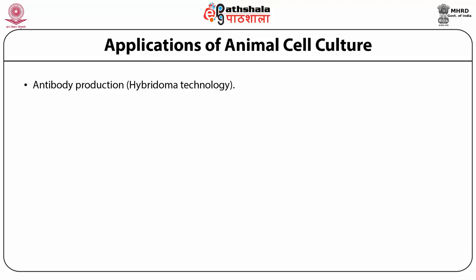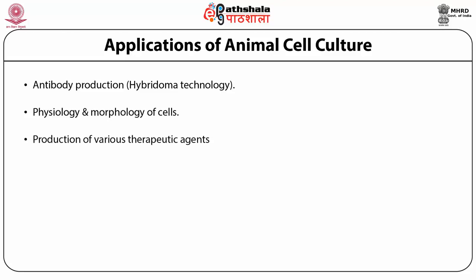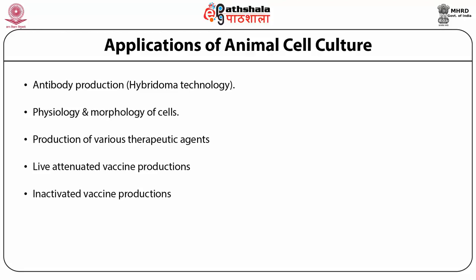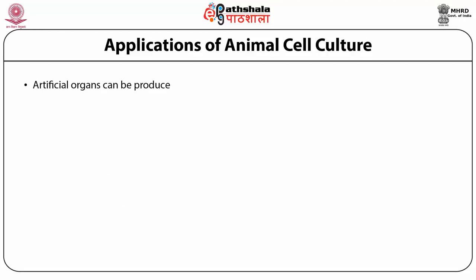Another application of animal cell culture technology is to study the physiology and morphology of cells. It can also be utilized for the production of various therapeutic agents. Animal cell culture can be used to produce live vaccines and inactivated vaccines to treat various viral diseases, and it can also be used for the cultivation of various viruses.